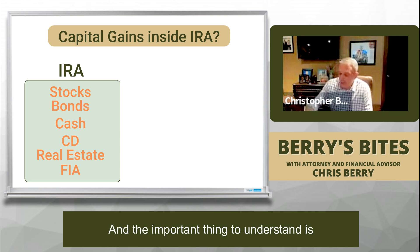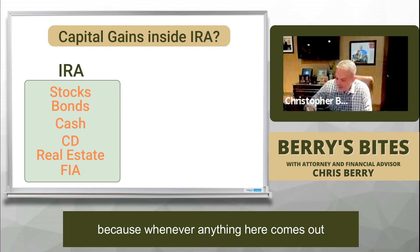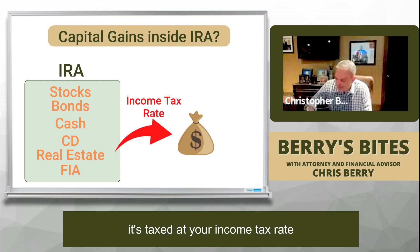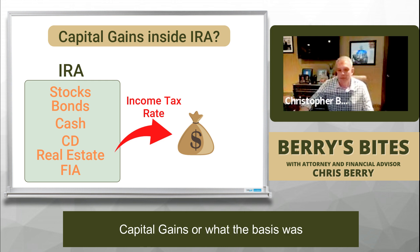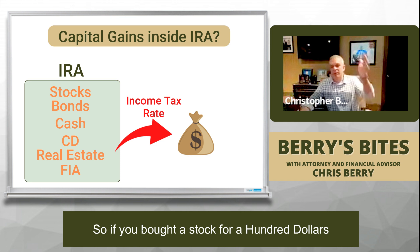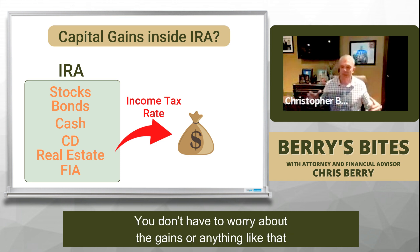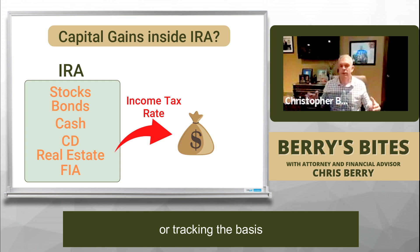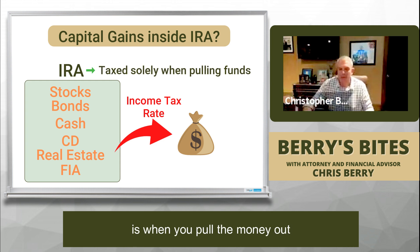Think of this as a box, and the important thing to understand is the basis really doesn't matter, because whenever anything comes out, it's taxed at your income tax rate. So when we're talking about IRAs, we're never really worried about capital gains or what the basis was. If you bought a stock for a hundred dollars and now it's a thousand dollars, you don't have to worry about the gains or tracking the basis, because the only time it's taxed is when you pull the money out.